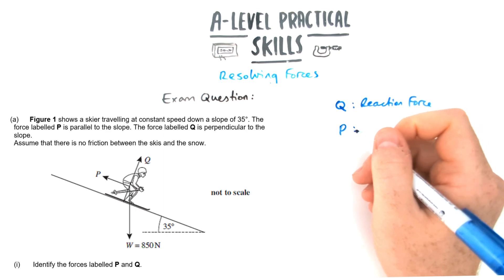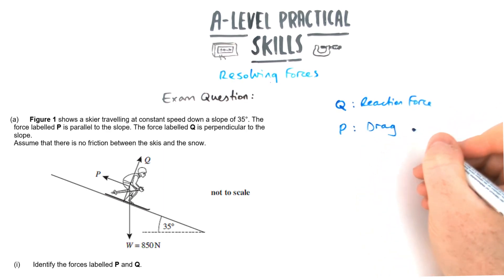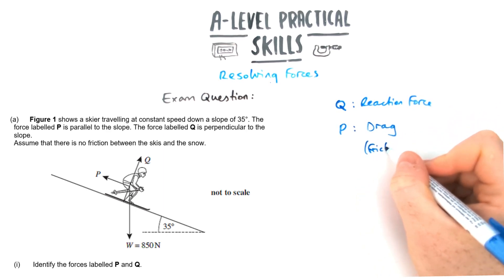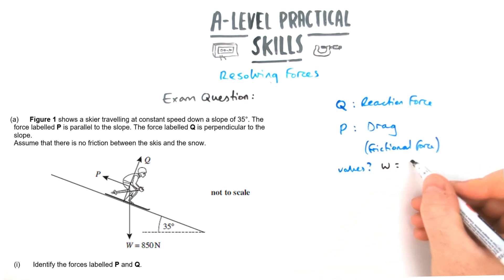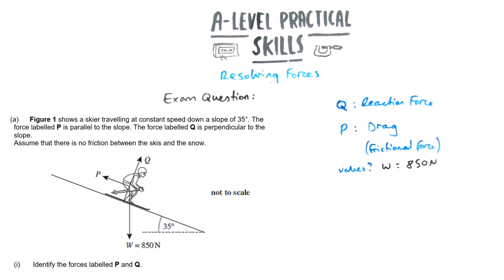The question asks us to label what Q and P are. So label them first of all. Q is the reaction force. We've just covered that going perpendicular to the slope. In this case, P could be drag or air resistance or a frictional force, we could say overall. Later on in the question, I'll ask you to work out the values. Let's work those out. The weight is 850 newtons.